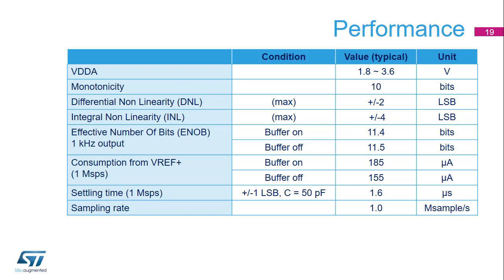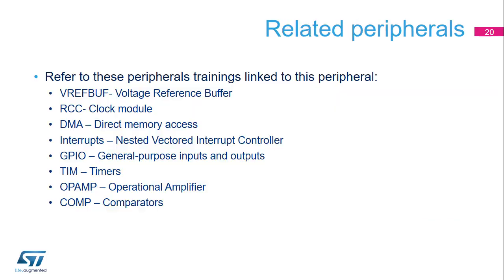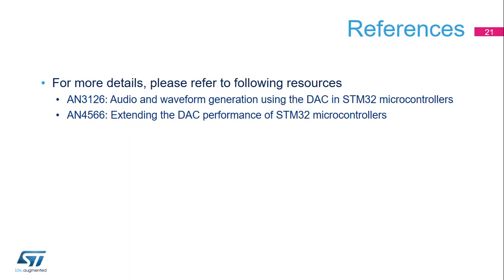The DAC buffered output has a settling time of 1.6 microseconds with a 50 picofarad load. The DAC can handle a sampling rate of 1 mega sample per second. This is a list of peripherals related to the DAC. Please refer to these peripheral trainings for more information if needed. Application notes dedicated to DAC topics are also available.